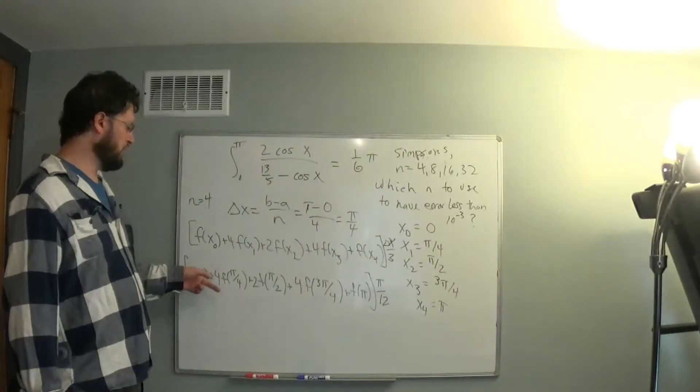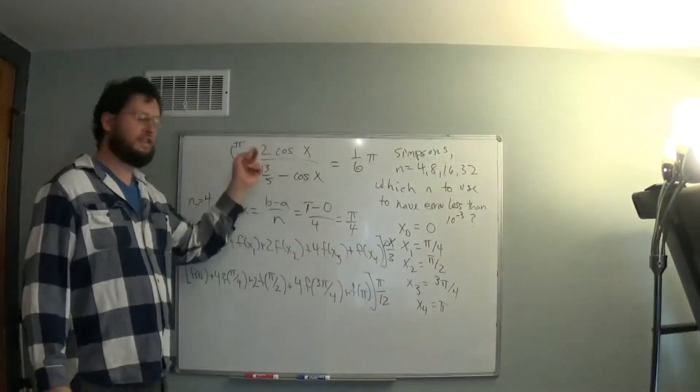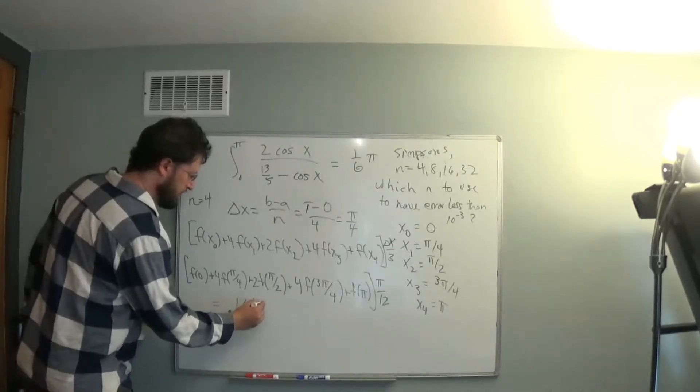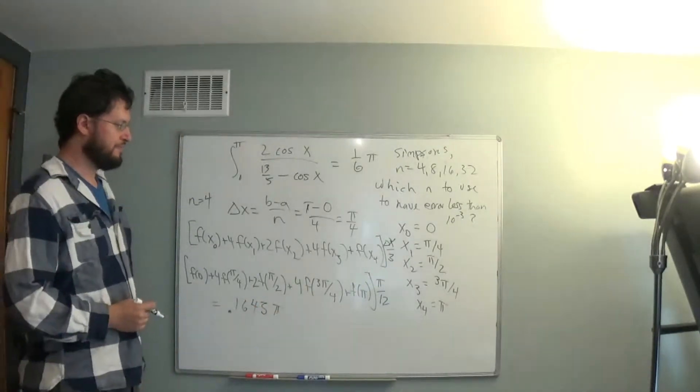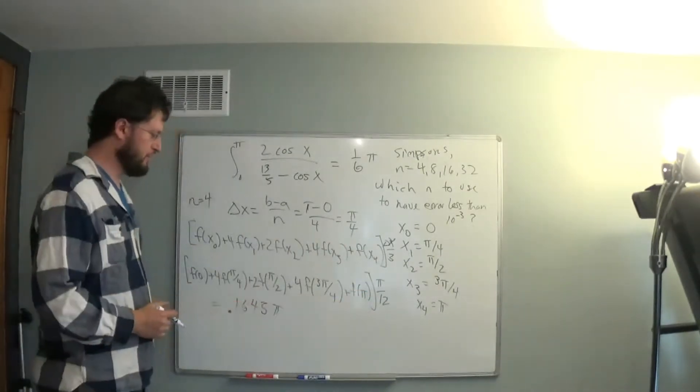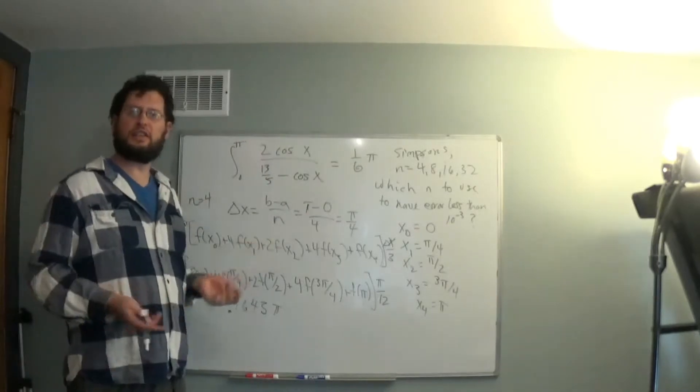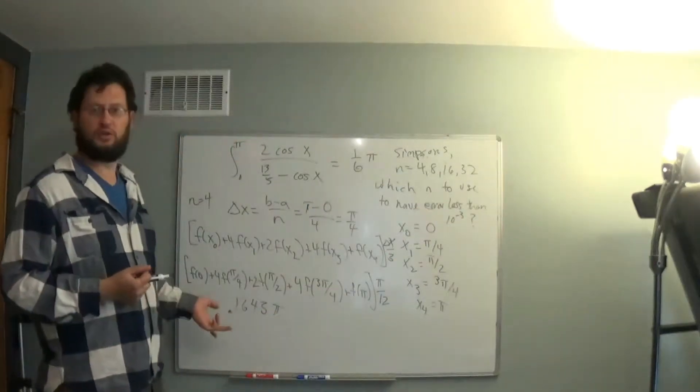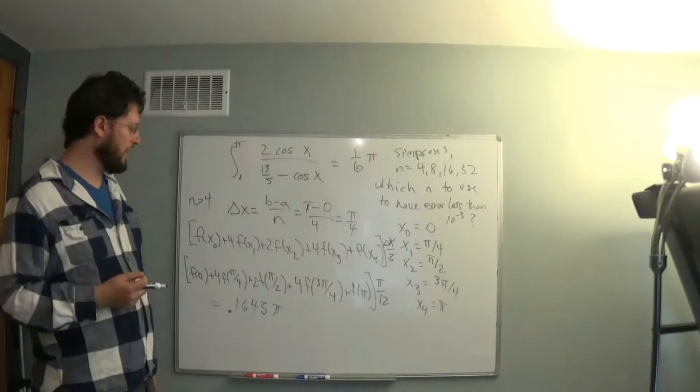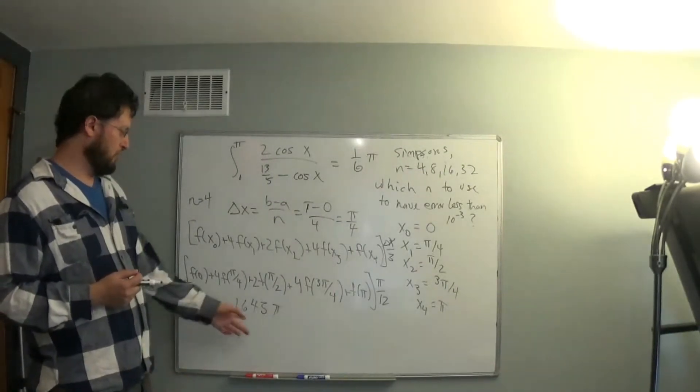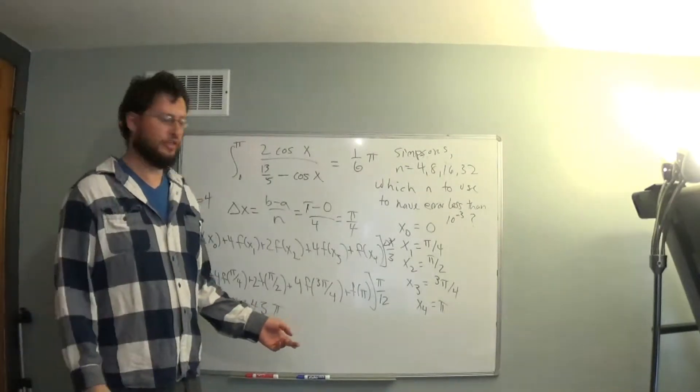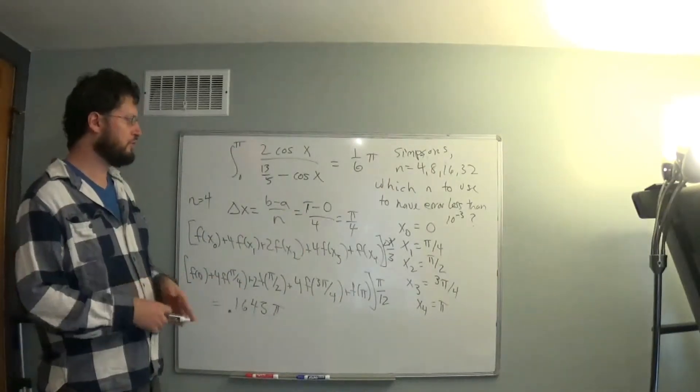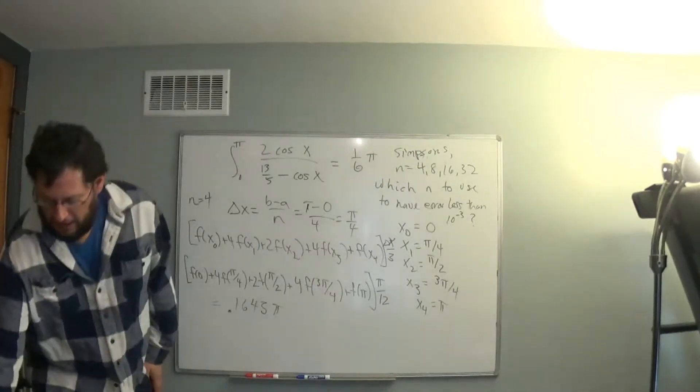Now if we simply just plug these values in—0, pi over 4, pi over 2, 3 pi over 4, pi into this function—evaluate this all out. I'm not going to do that by hand. I've done that so that I can see what we get. We get 0.1643 times pi. And this is what this evaluates to. 1 sixth pi, 1 sixth is 0.16 repeating. So the question is, is this within 10 to the minus 3 of the correct value? Well, we need to include our pi as well. And so already we can see that the answer is going to be no because it's not within a thousandth even without multiplying by pi. So we will have to move to the next value of n and see what happens.